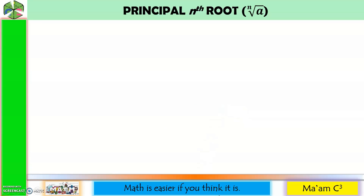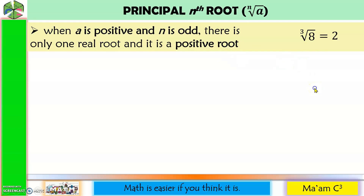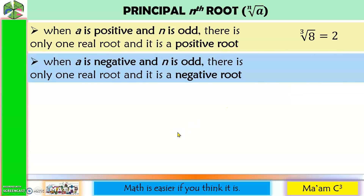Let us talk about principal root. We have four possible cases. First, when a is positive and n is odd, there is only one real root and it is a positive root. Next case, when a is negative and n is odd, there is only one real root and it is a negative root.